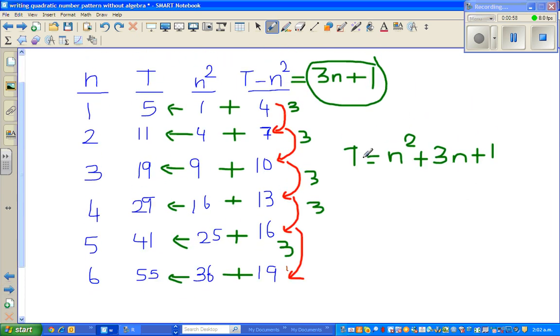We said the relation between T and N should be N squared plus 3N plus 1. I also showed it on a calculator.